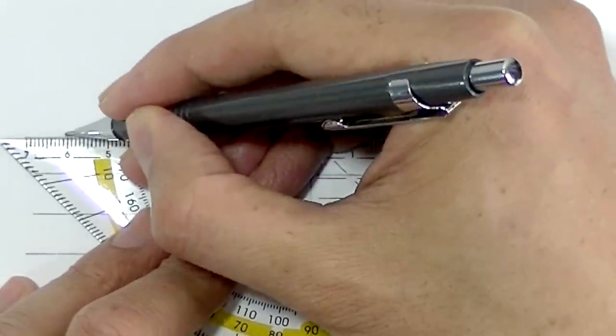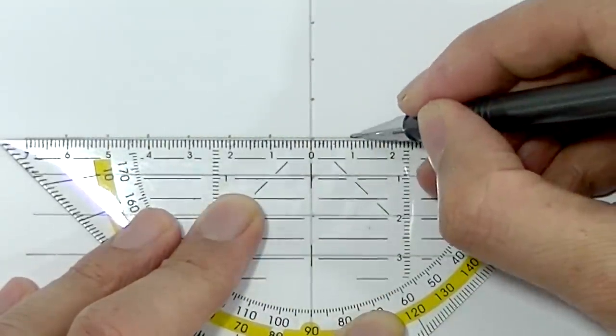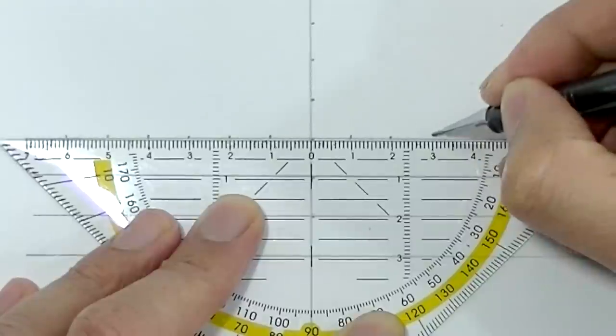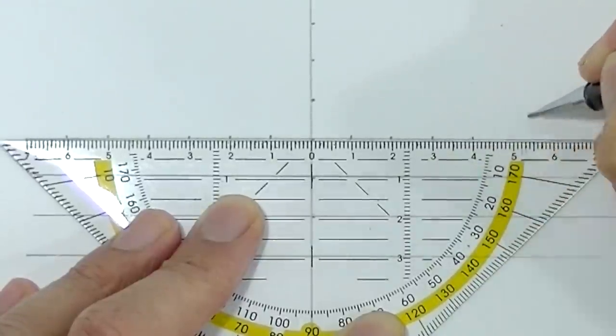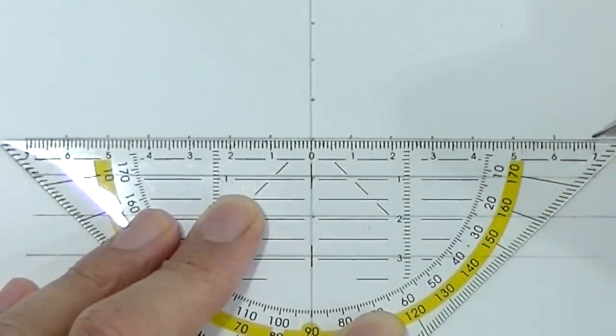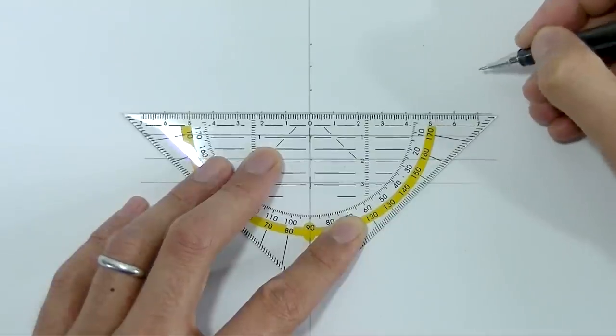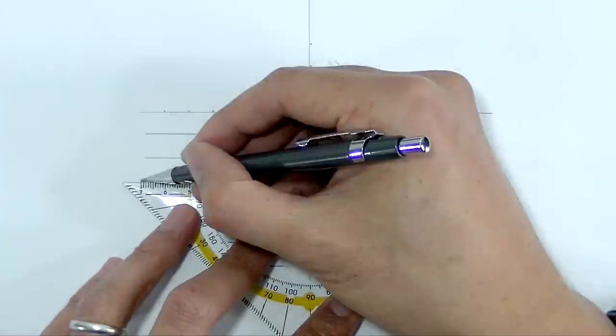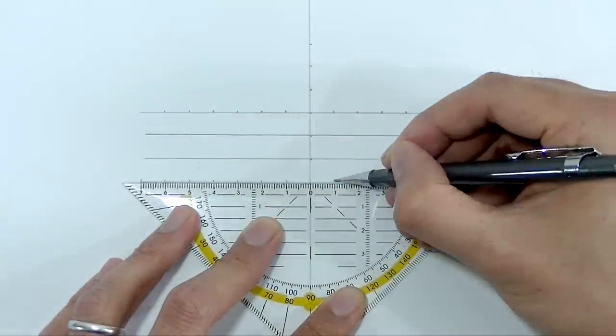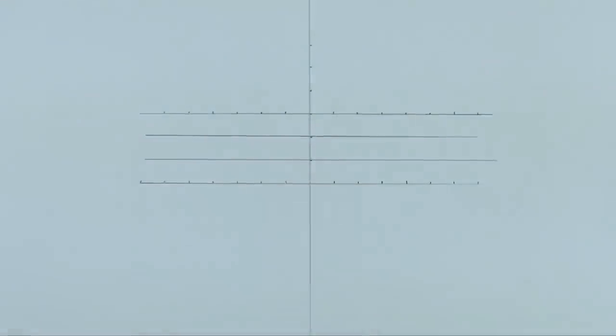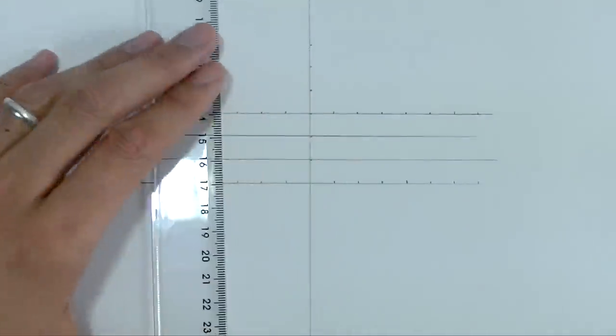I'll put a link in the description box so you can check that one out. Basically I'm trying to make a grid of about 20 by 20 centimeters, a little bit more.